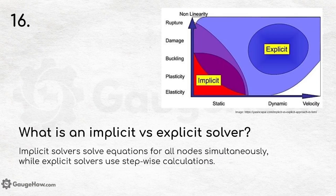What is an implicit versus explicit solver? An important question. Implicit solvers solve equations for all nodes simultaneously, while explicit solvers use stepwise calculation.